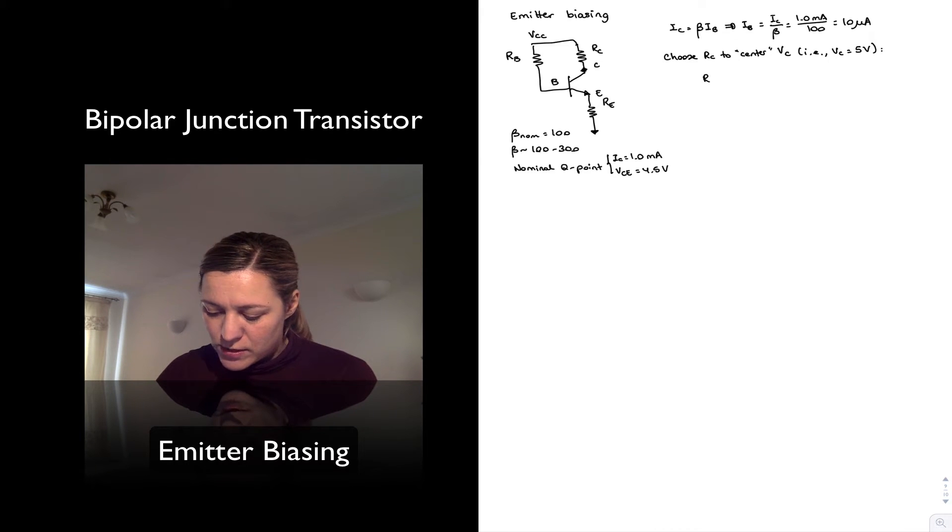And so RC is going to be equal to, from the picture, VCC minus VC divided by IC per Ohm's law. And I want VC to be centered at 5 volts.